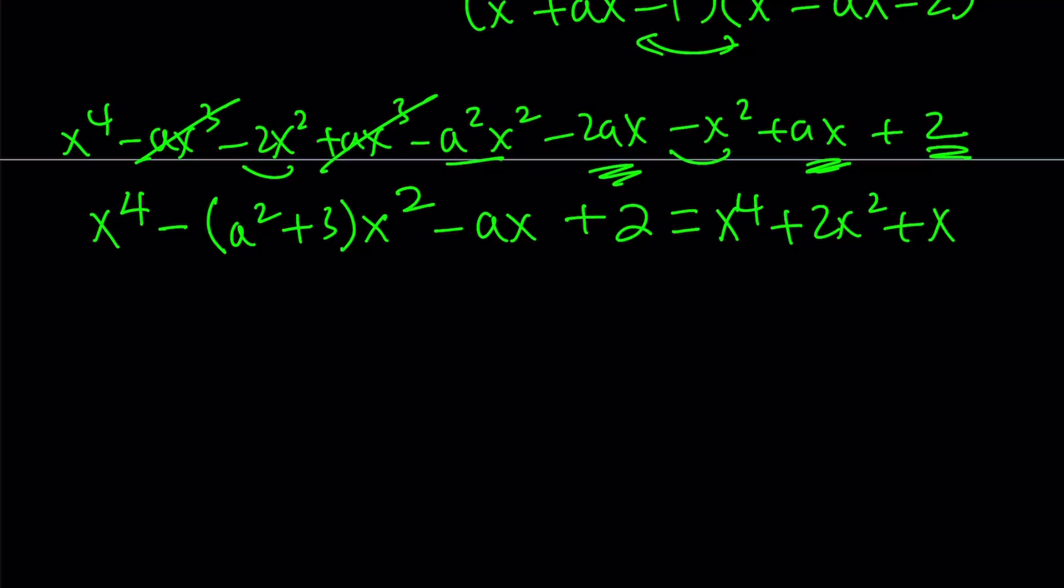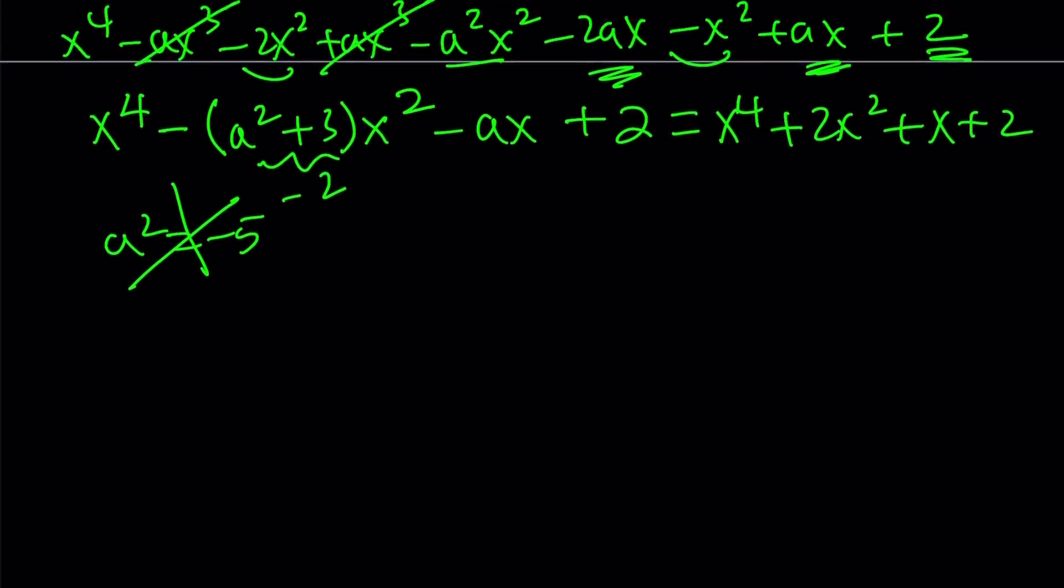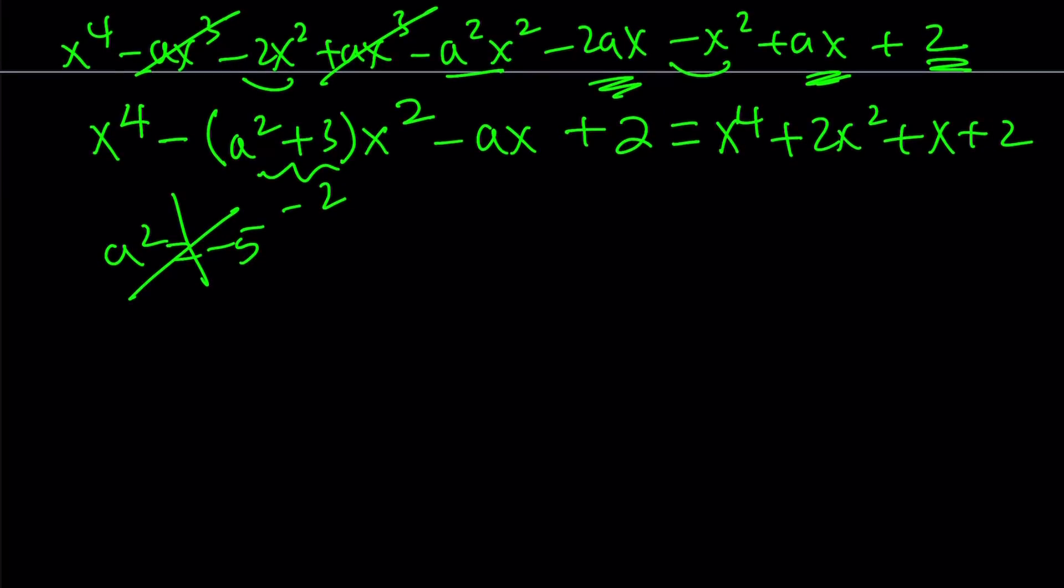And from here, to keep a long story short, you want this to be negative 2, which implies that a squared equals negative 5. Obviously, that's not going to work because we're looking for a real number. I mean, integer, even like a more specific case. So, this option is not going to work. Therefore, we have to go with the other one.